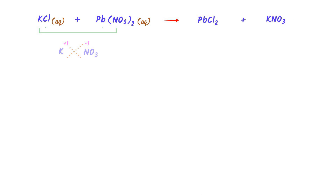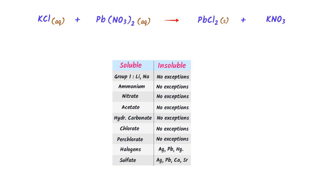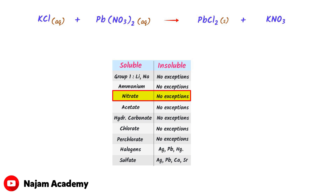The second step is to find the solubility of the products. According to the solubility table, chlorine with positive cations like lead is not soluble. Hence, lead chloride is not a soluble product. On the other hand, all nitrate species are soluble. Hence, potassium nitrate is a soluble product.